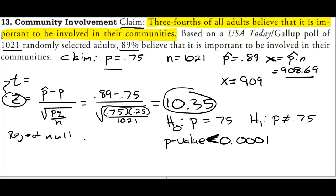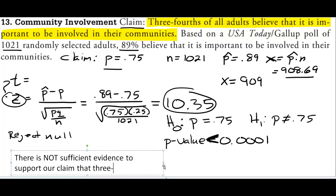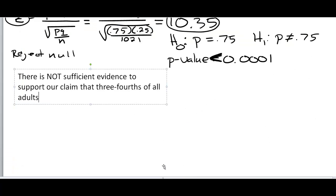And then we could write something up in complete sentences describing what's going on, that there is not sufficient evidence to support our claim that three fourths of all adults. You get the idea.